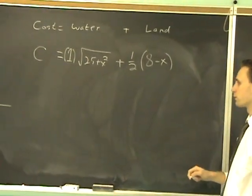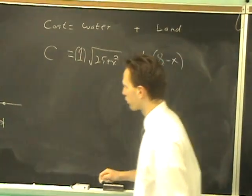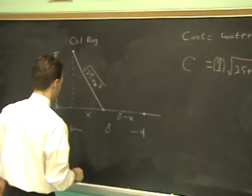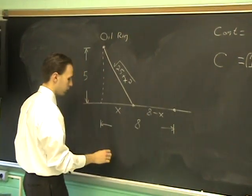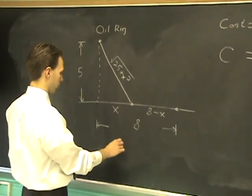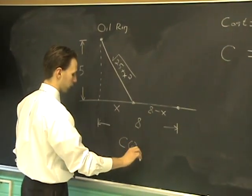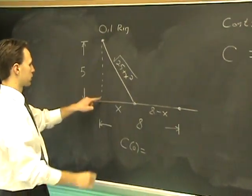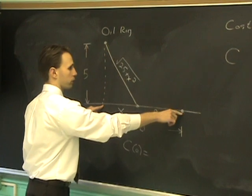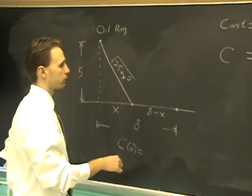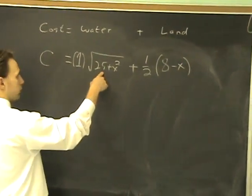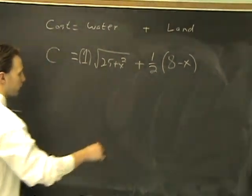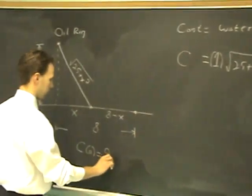What are the endpoints of our interval here? The endpoints are x can vary from 0 to 8. We got to do C of 0, see what that is. If you make x equal to 0, that means you're going straight to land and going all the way over. If you plug that in to your function, what you get is 5 plus 4, that's 9 million right there.